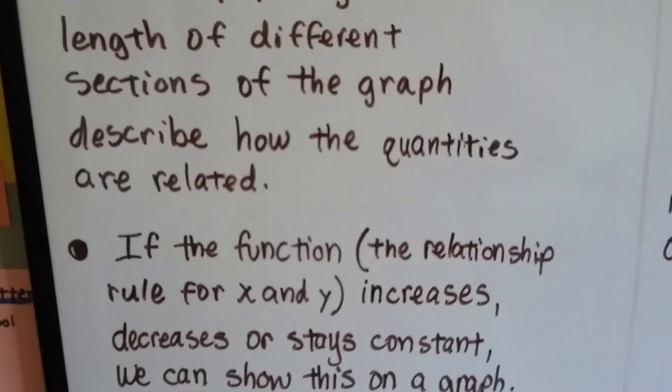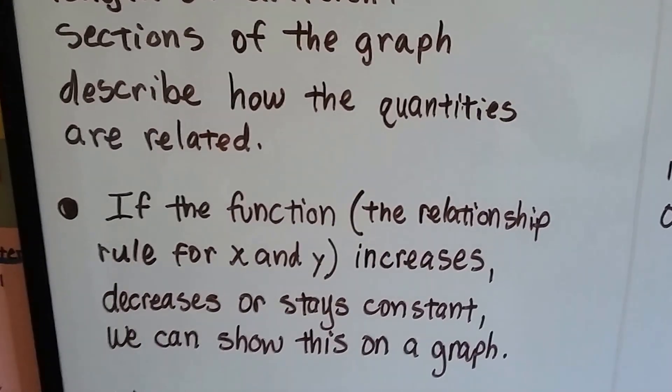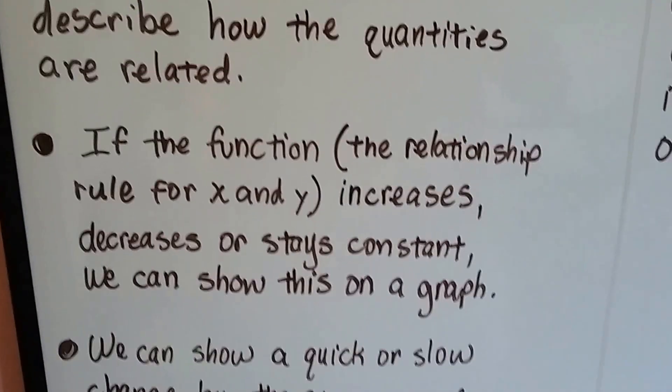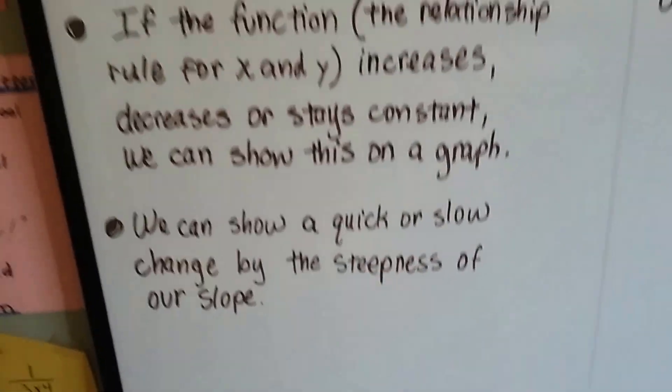If the function, that relationship rule for x and y, increases, decreases, or stays constant, we can show this on a graph. We can show a quick or slow change by the steepness of our slope of the line.